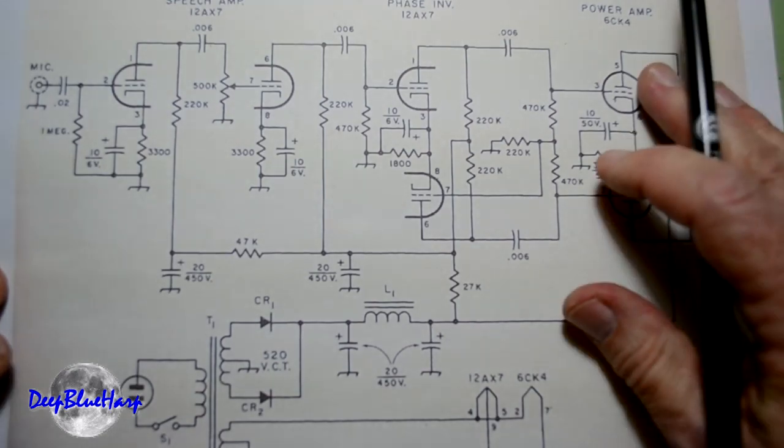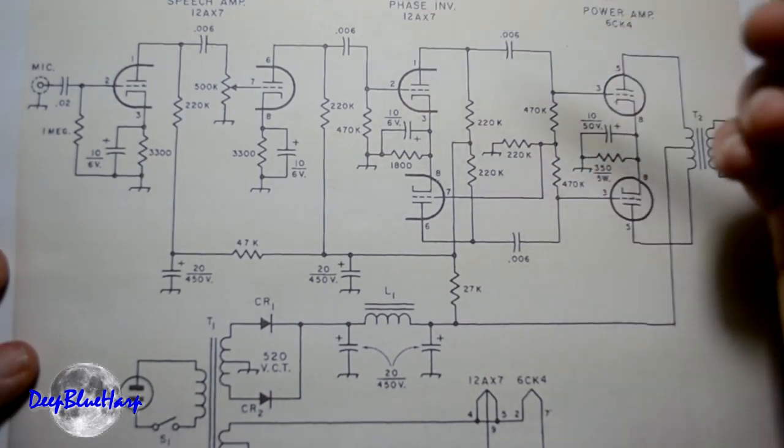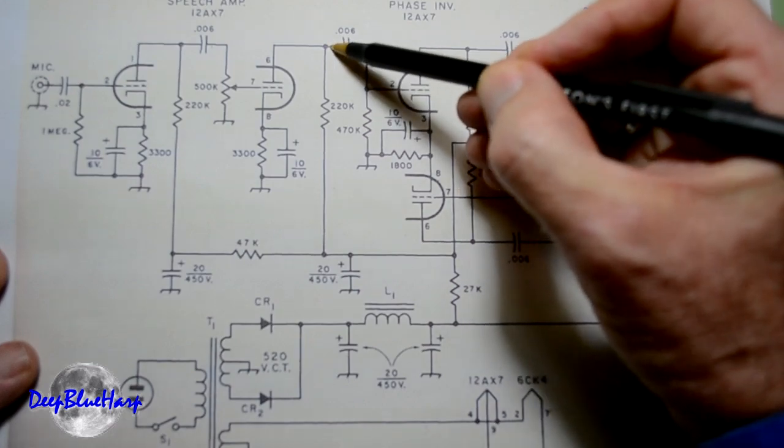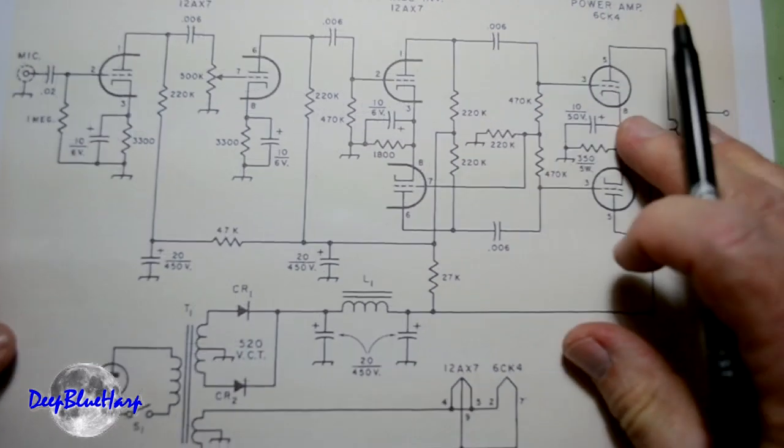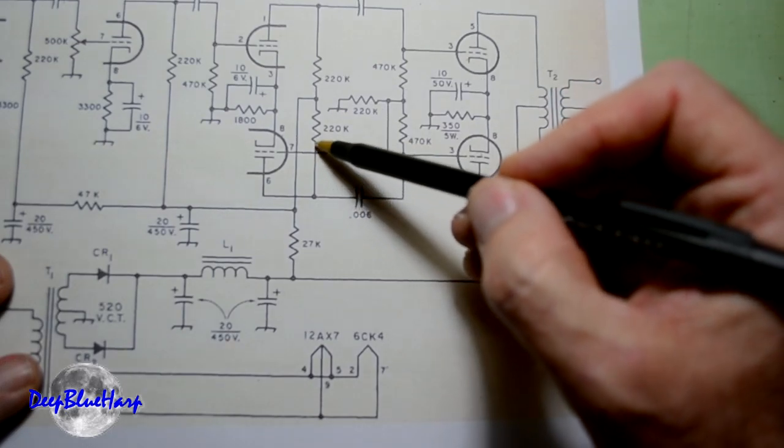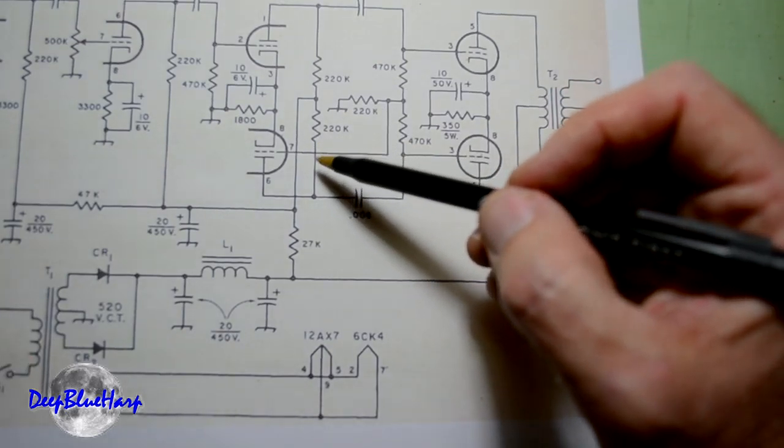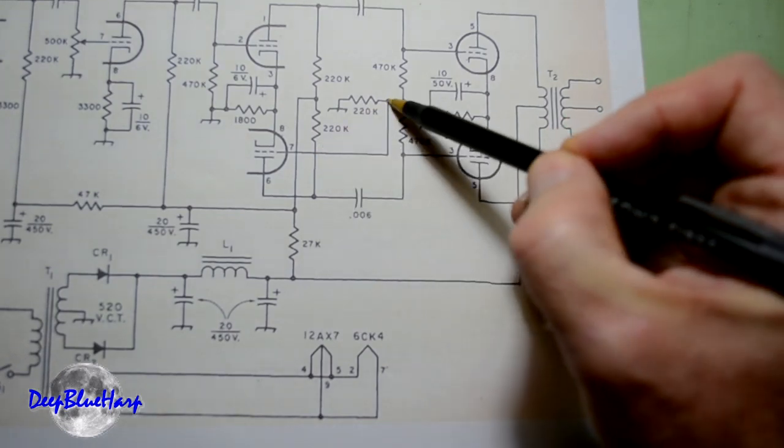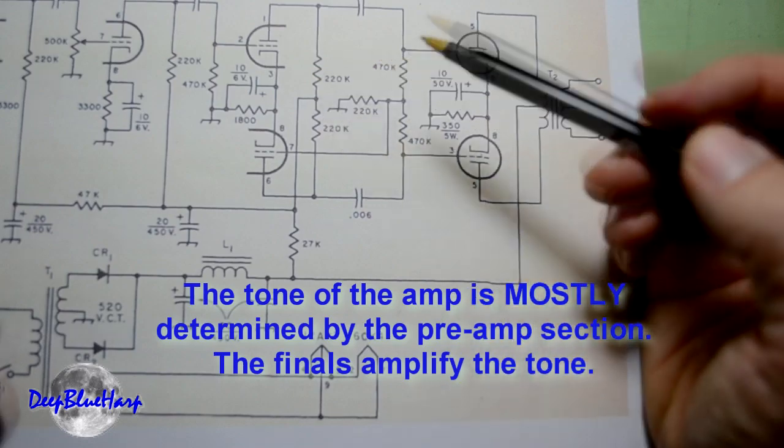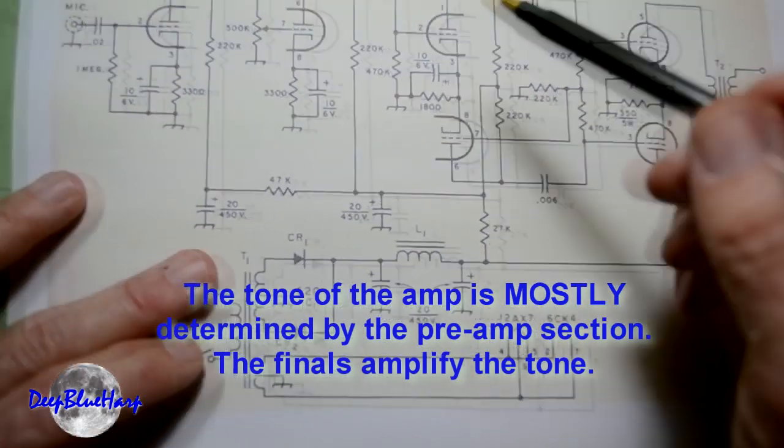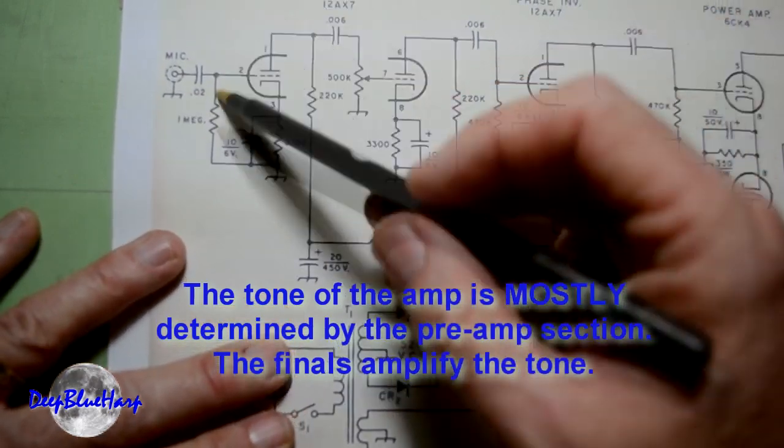Basic schematic reading 101, where you see a dot, that means this wire and that wire are soldered together. Where you see a cross, no dot, that means we have to draw it on paper somehow, but that means they are not connected. Connected, connected, and we're not going to use this or this section. We're just going to stay right here with this section.